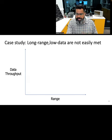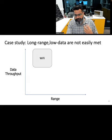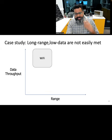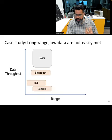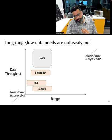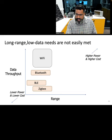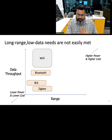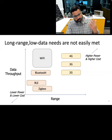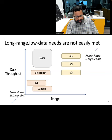We can observe a relationship between throughput and range by looking at the following graph. Wi-Fi offers high throughput but a limited range. IoT standards such as Bluetooth and ZigBee provide lower throughput but a slightly higher or comparable range compared to Wi-Fi. However, one of the most crucial parameters for IoT devices is power consumption and cost — increasing range or throughput results in higher power consumption and cost. Cellular standards like 2G, 3G, and 4G have higher power, higher cost, and achieve higher throughput compared to typical IoT standards.